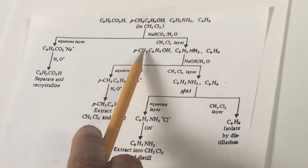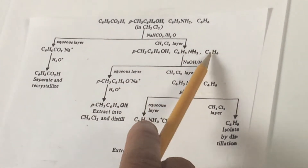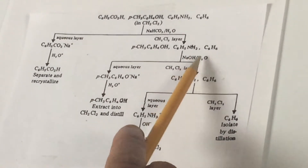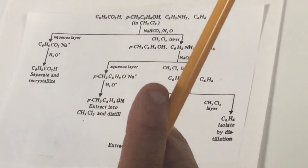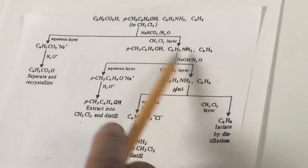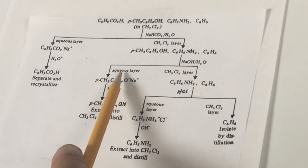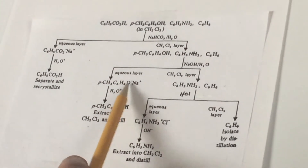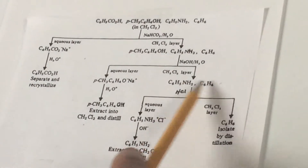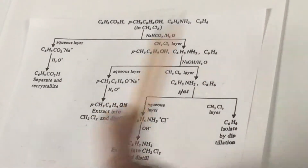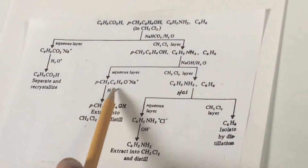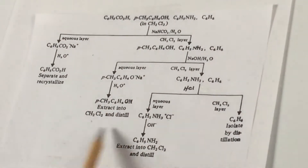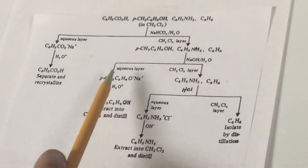Now we have three left: the paramethylphenol, the aniline, and the benzene. The next move is to use NaOH. NaOH would be used to extract a phenol. When the phenol reacts with aqueous NaOH, it's going to separate into two layers — we get the phenoxide salt in the aqueous layer, and the two remaining compounds, aniline and benzene, in the organic layer. Again, you separate it out in the funnel into the aqueous layer, add acid, and then you get back your paramethylphenol extracted. Finally, just distill it off and we have this separated.